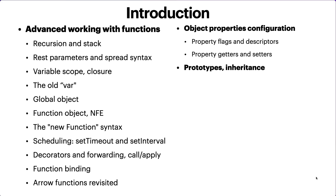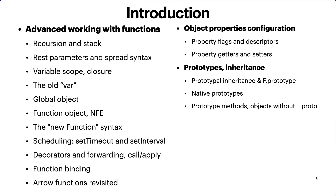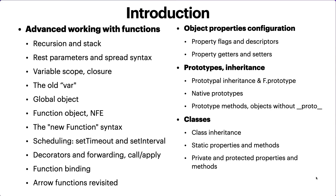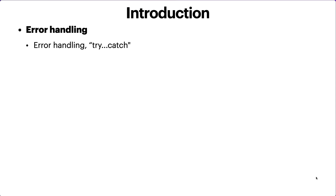We'll talk about object property configuration — property flags and descriptors, getters and setters. Since JavaScript is also an object-oriented programming language, we'll cover prototypal inheritance, native prototypes, classes, class inheritance, static properties and methods, private and protected properties, extending built-in classes, and the 'instanceof' operator for checking class types. Then of course error handling — using try/catch and custom errors.